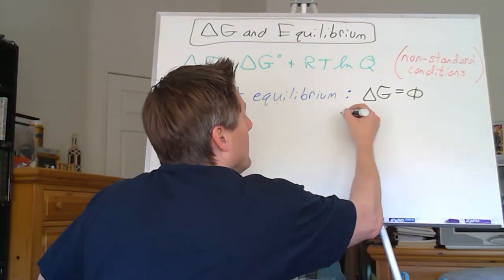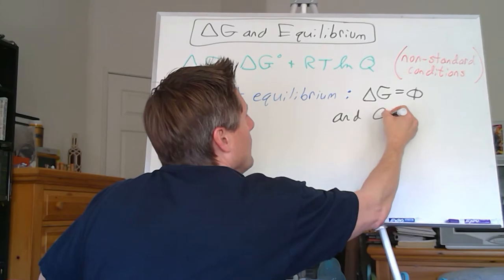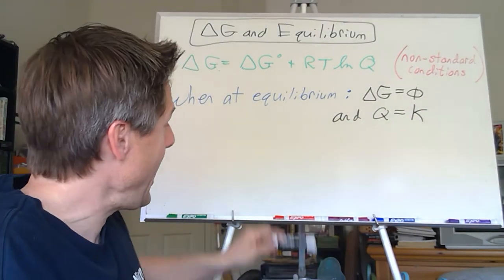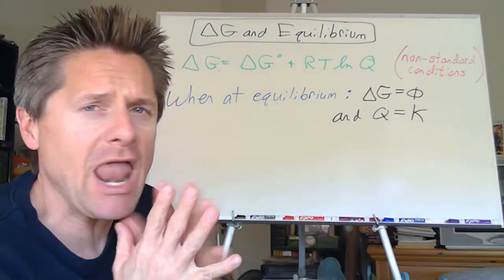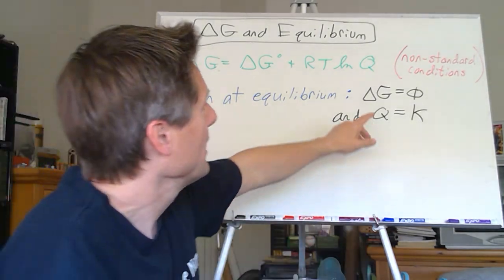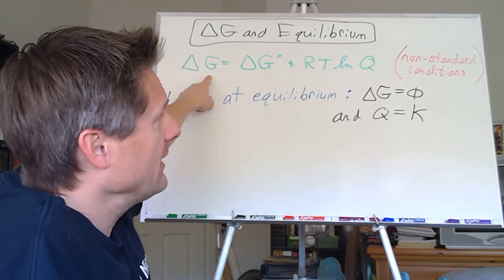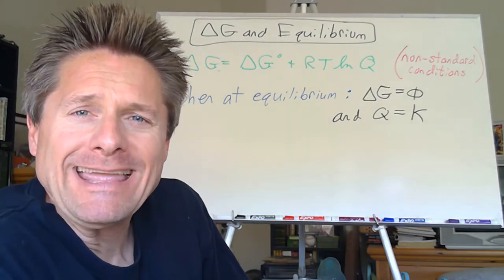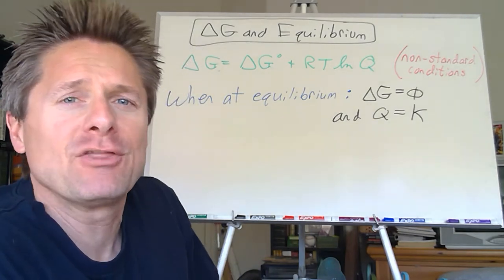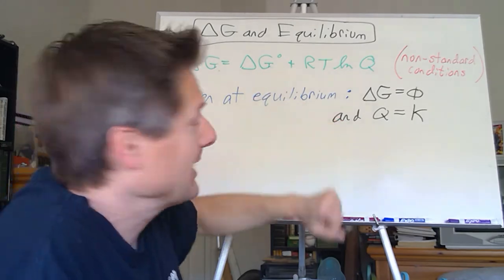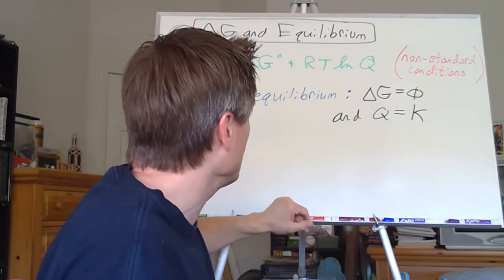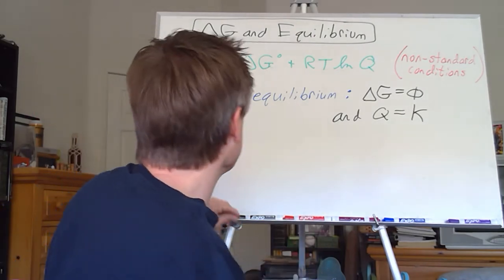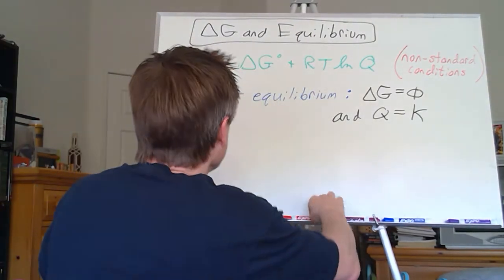...is equal to the equilibrium constant K. Can we do some algebraic substitutions? I love algebraic substitutions. Let's put in a value of zero for delta G and the value of K for Q and get another one of the top three thermodynamic equations. This next one is going to be critical because it relates thermodynamics to equilibrium directly.